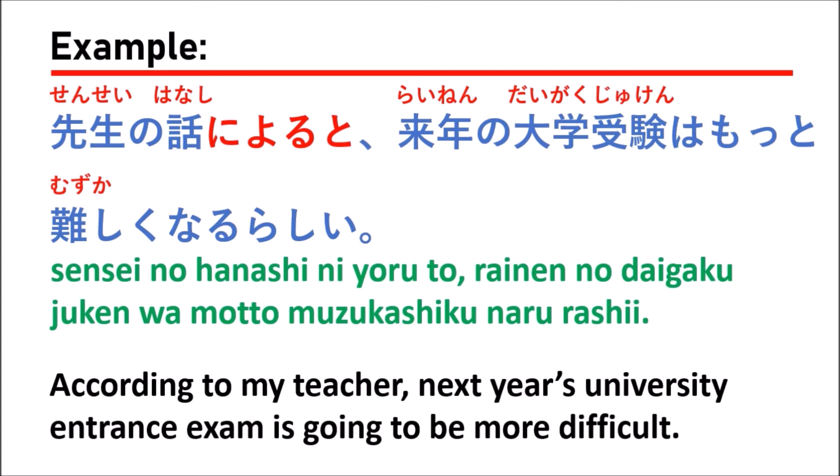In this sentence, you see that it is just like the last sentence — they say 先生の話しによると, meaning 'according to the teacher' or 'according to what the teacher told.' Then 来年の大学受験はもっと難しくなるらしい — the new sentence means 'next year's university entrance examination is going to be more difficult.'